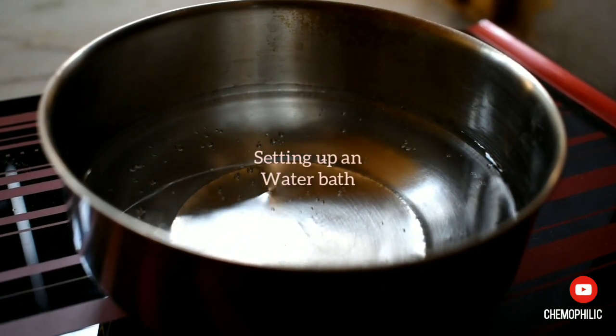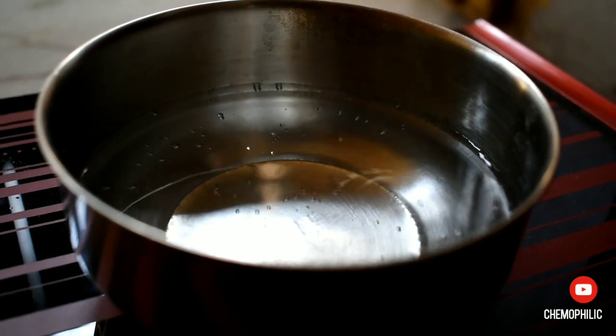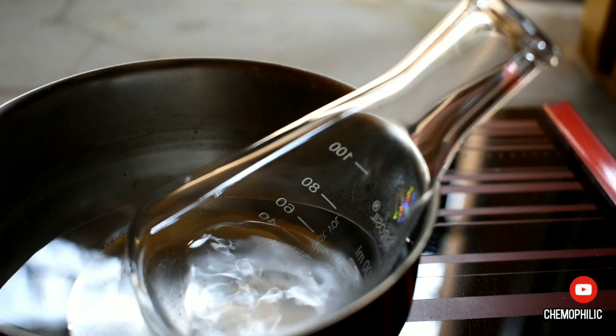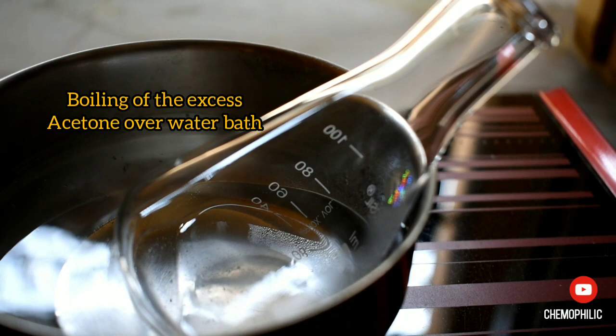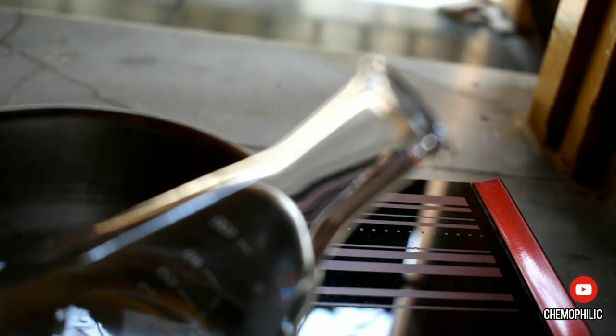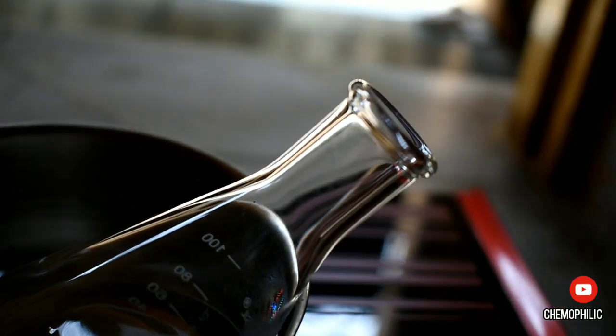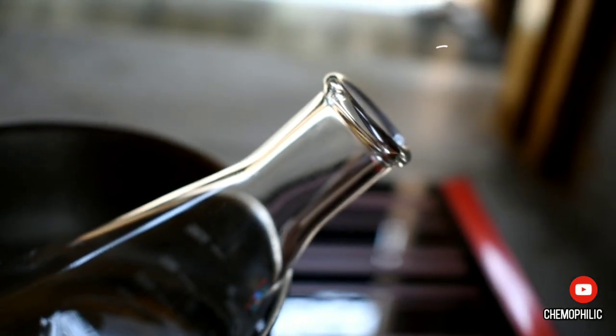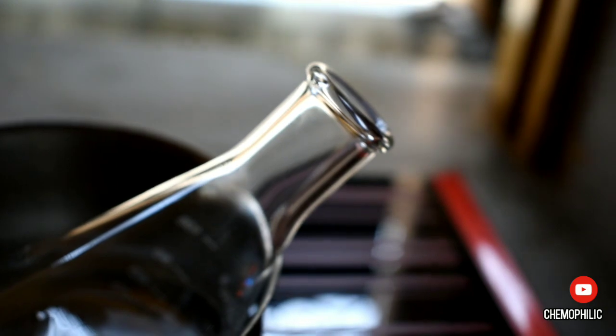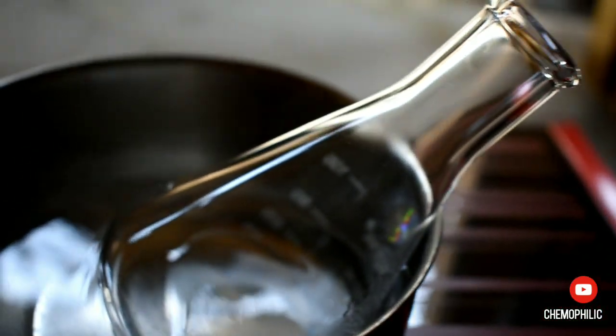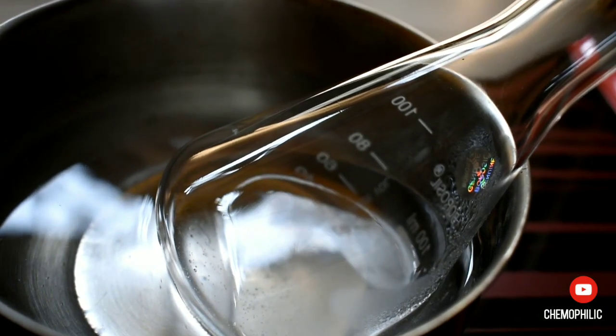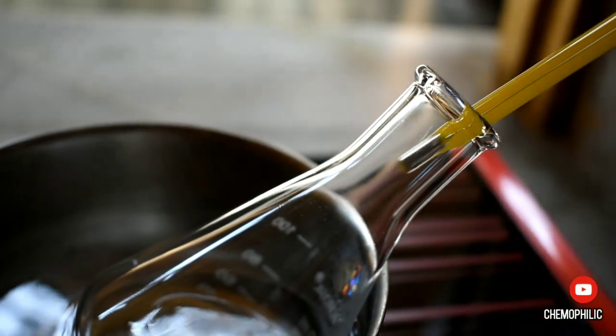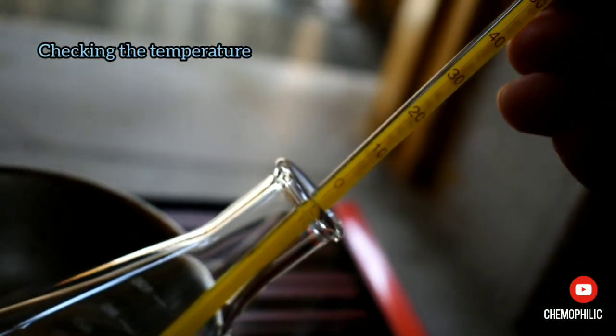Then I set up a hot water bath to boil off the excess acetone from the mixture. Both acetone and chloroform boil below 60 degrees C and can be removed easily by boiling. The vapors of acetone are evolved and you can perform a distillation setup to condense back the vapors and use it later for cleaning purposes. The temperature was around 60 degrees Celsius.